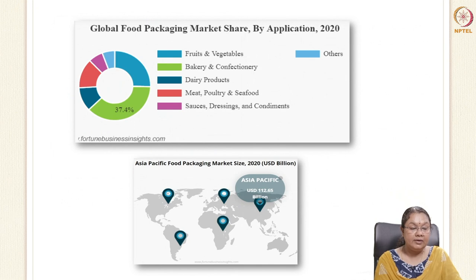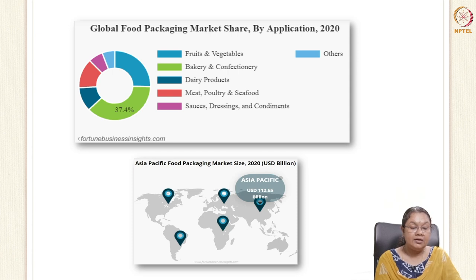Looking at the market share, the major share is contributed by bakery and confectioneries — 37% of the global packaging market. Other sectors such as fruits and vegetables, dairy, meat and poultry, seafood, sauces, dressings, condiments, and others contribute much lesser. Asia-Pacific contributed around $112.65 billion in 2020, representing approximately 50% of the total — making it the major contributing region.